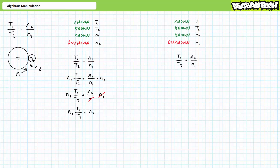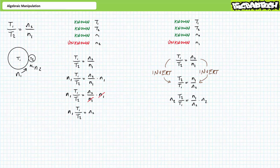Our next problem is asking us to solve for unknown property N1 given known properties N2, T2, and T1. Given T1 over T2 equals N2 over N1, one may initiate this algebraic manipulation by inverting both sides. Multiply both sides by N2 — N2 cancels out on the right — and we're left with N1 equals N2 times T2 divided by T1.